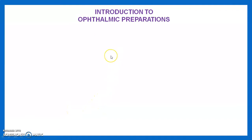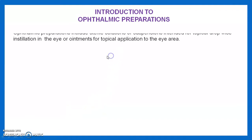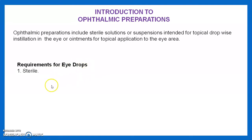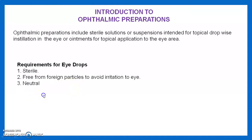Ophthalmic preparations include sterile solutions or suspensions intended for topical drop-wise installation in the eye, or ointments for topical application into the eye area. Requirements for eye drops include: they should be sterile, free from foreign particles to avoid irritation, neutral, and isotonic with lacrimal secretion. Our lacrimal secretion pH is approximately 7.4.